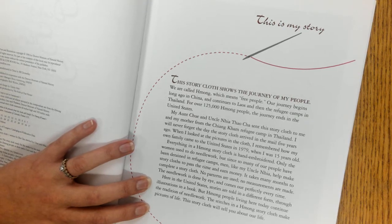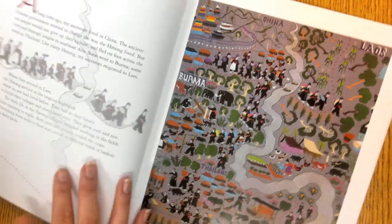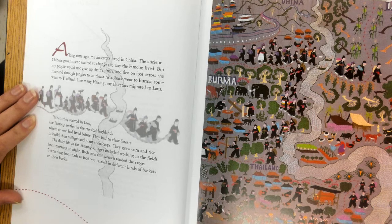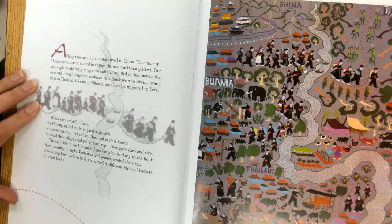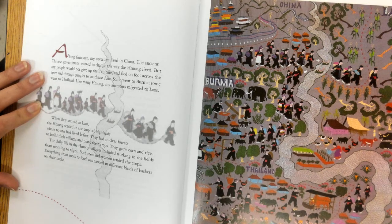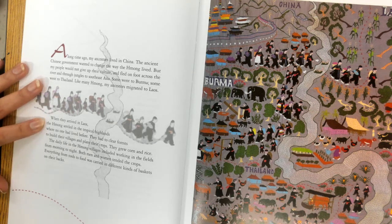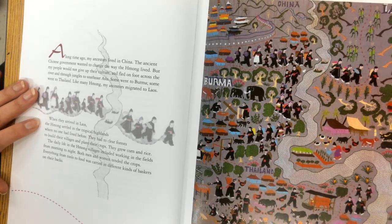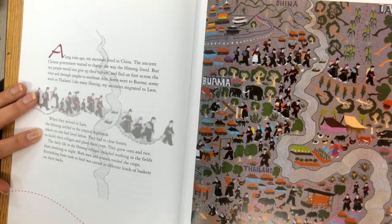The stitches in a Hmong story cloth make pictures of life. This story cloth will tell you about our life. A long time ago, my aunt's ancestors lived in China. The ancient Chinese government wanted to change the way the Hmong lived, but many people would not give up their culture and fled on foot across rivers and through jungles to Southeast Asia. Some went to Burma, some went to Thailand. Like many Hmong, many ancestors migrated to Laos. When they arrived in Laos, the Hmong settled in the tropical highlands where no one had lived before.